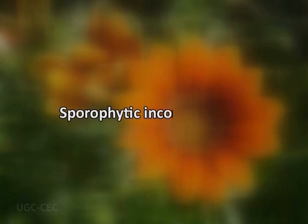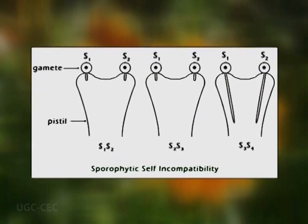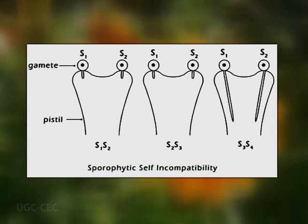In sporophytic incompatibility, the stigma is the site of the rejection reaction. Following incompatible pollination, the pollen grains either fail to germinate on the stigma, or if they do germinate, the pollen tubes formed are unable to penetrate the stigma, which develops callose depositions in the stigmatic papillae.